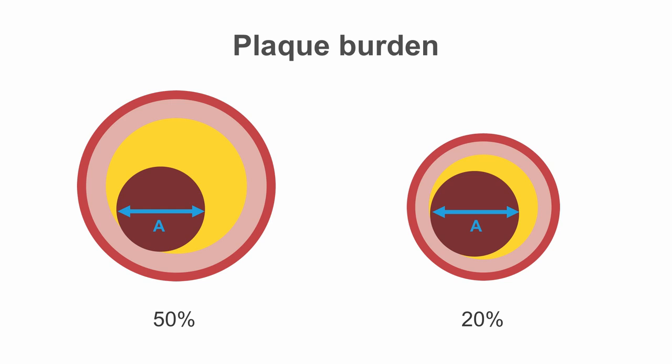In this diagram, we can see the lumen is the same size in both vessels, despite one having 50% plaque burden and one having 20%.